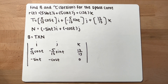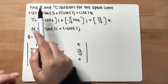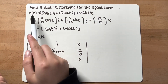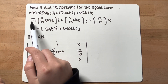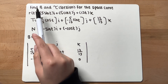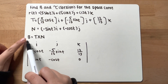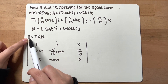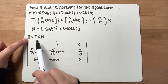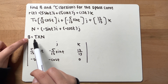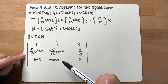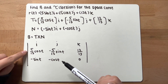This problem asks us to find B, the binormal vector, and the torsion for the space curve given here. We have the tangential component and the normal component. We want to begin by finding the binormal vector, so we recall that B is equal to the cross product of the tangential vector and the normal component. I have written here the layout of our cross product.